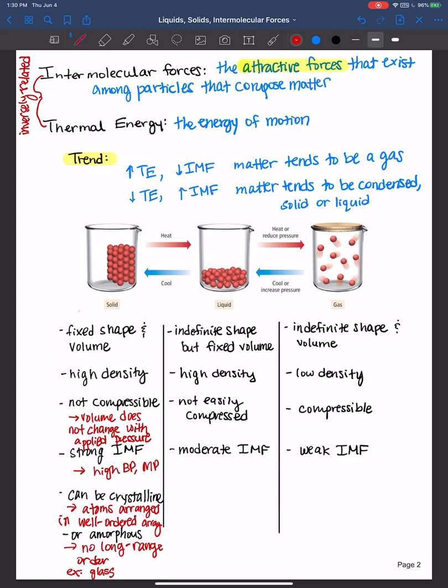Liquids have an indefinite shape but fixed volume. They take up the shape of their container. They also have pretty high density. They're not easily compressed, although they could be compressed a little bit since there is a little bit of space there. And they have moderate intermolecular forces. They still have a relatively high boiling point and melting point.